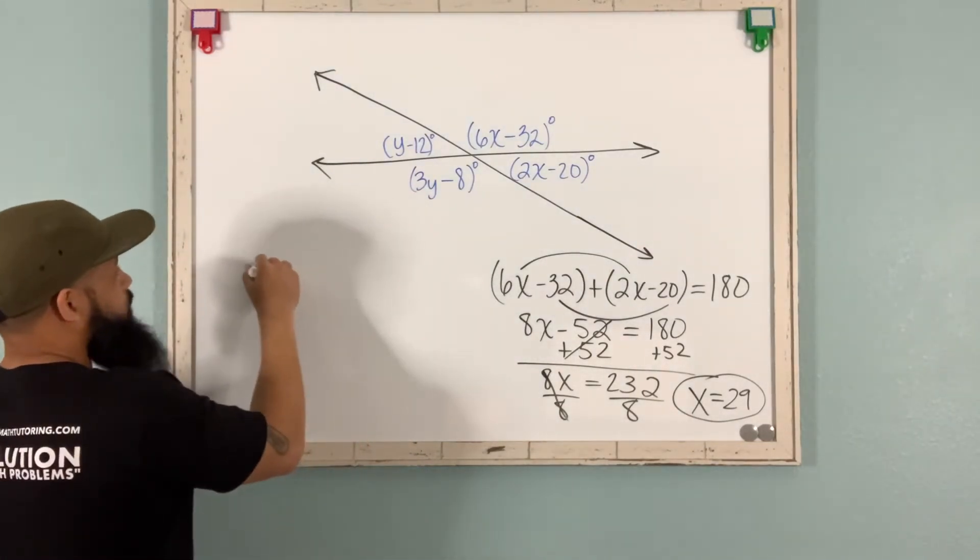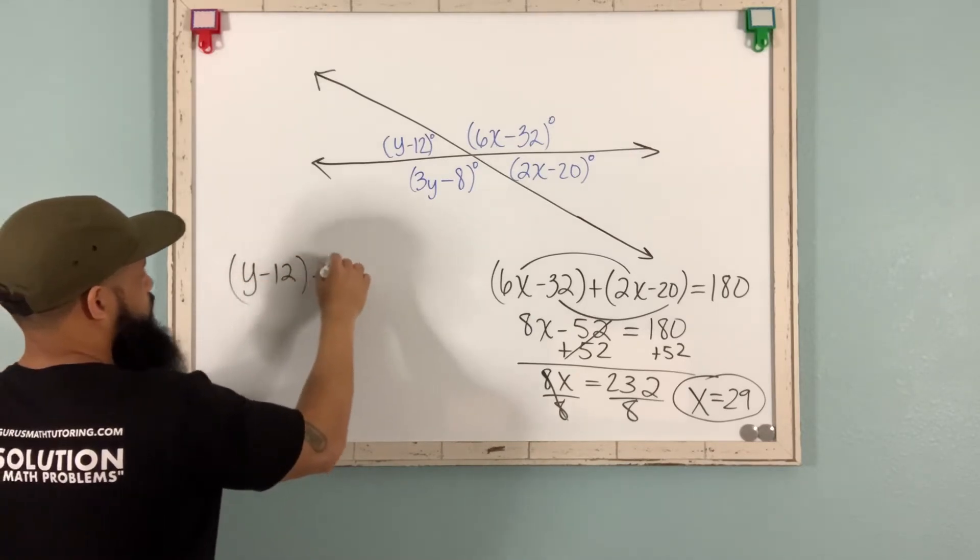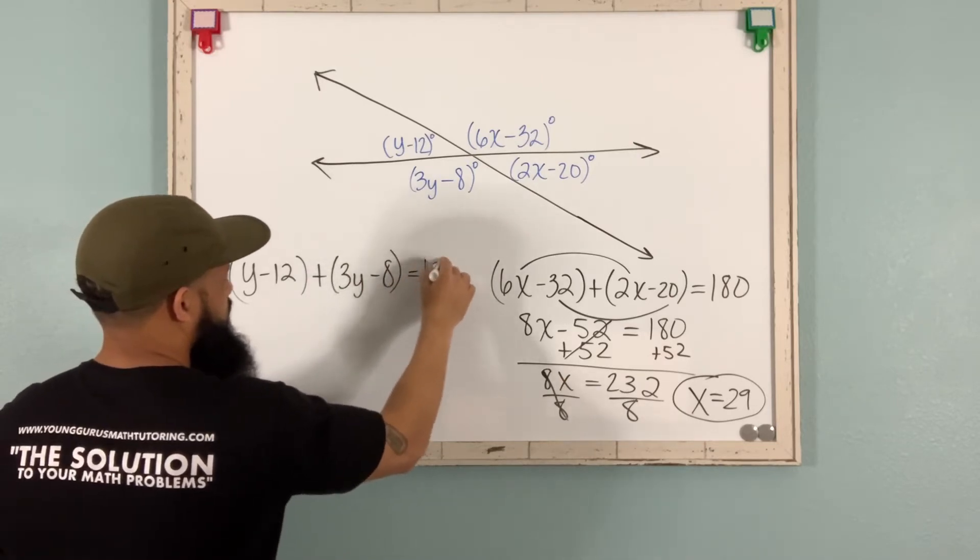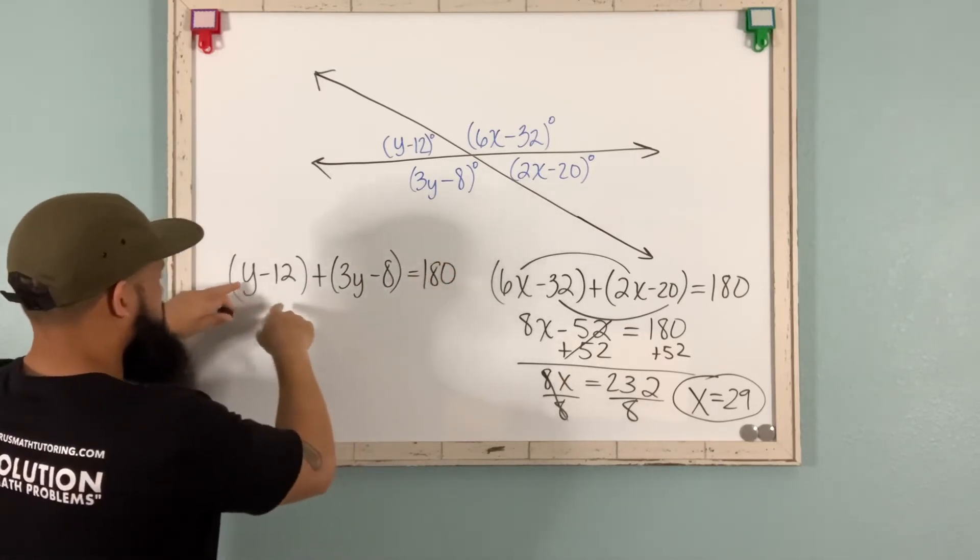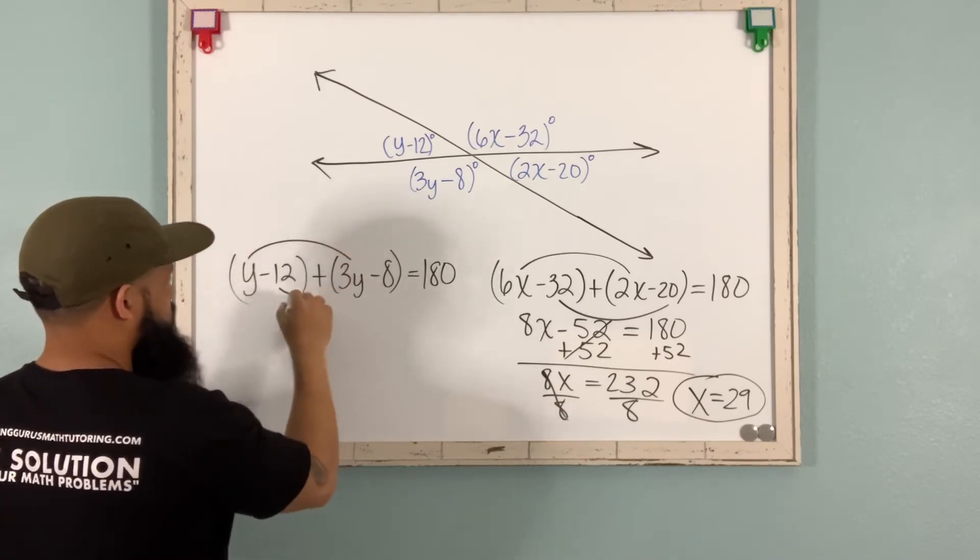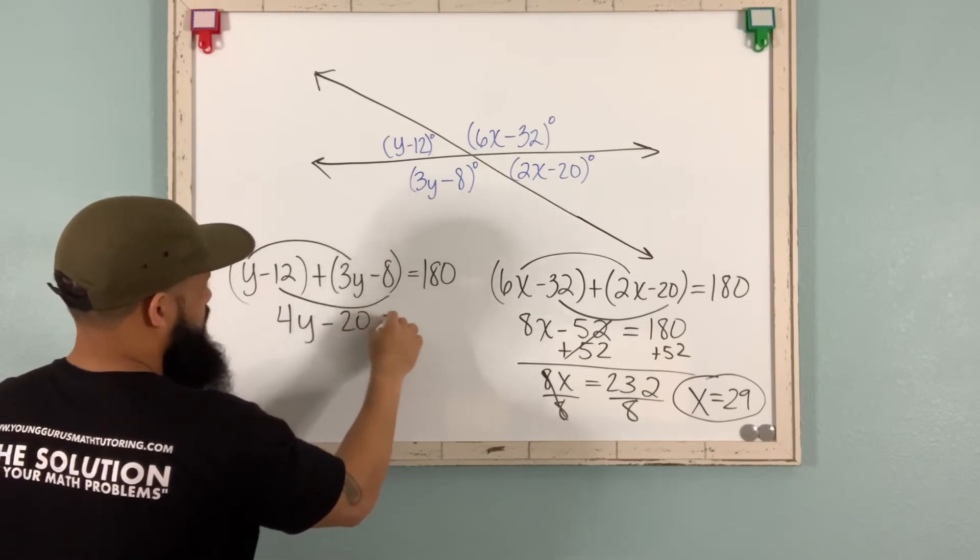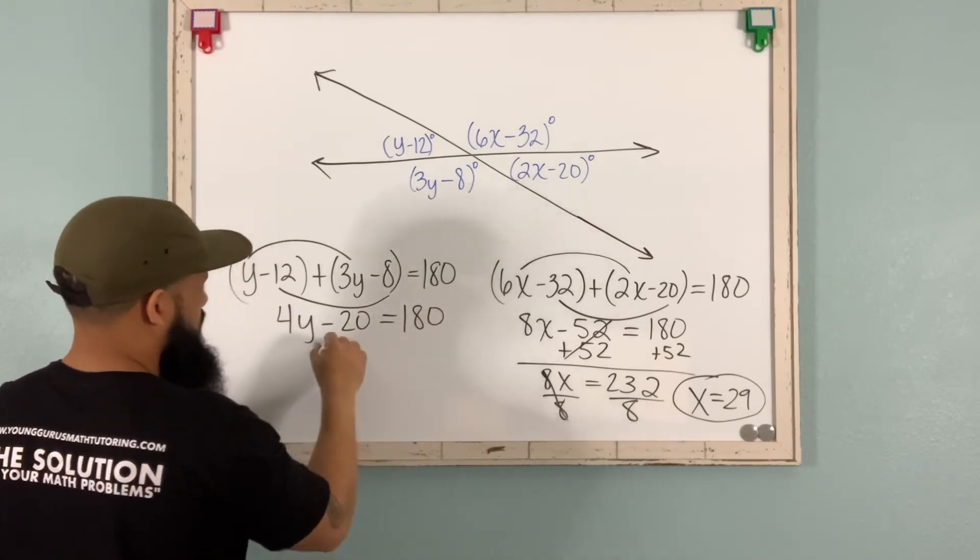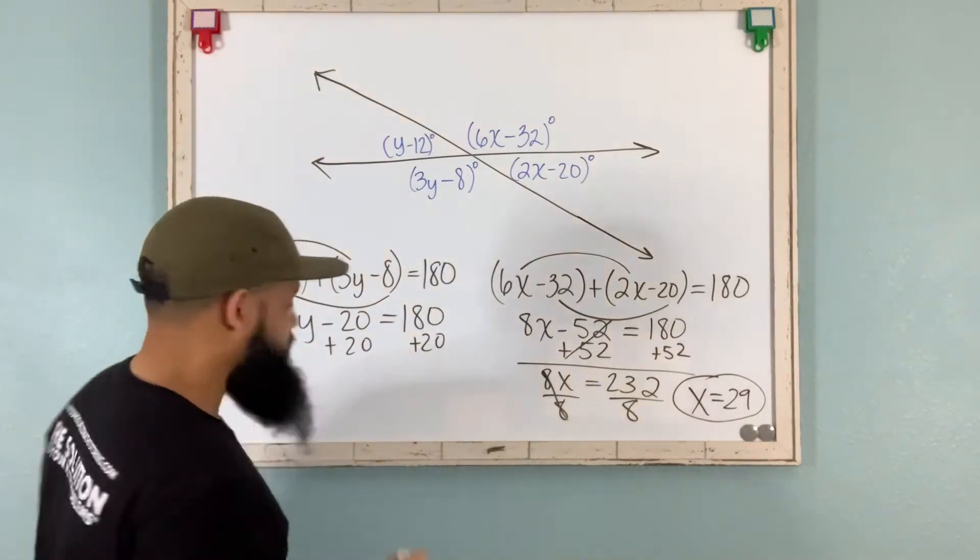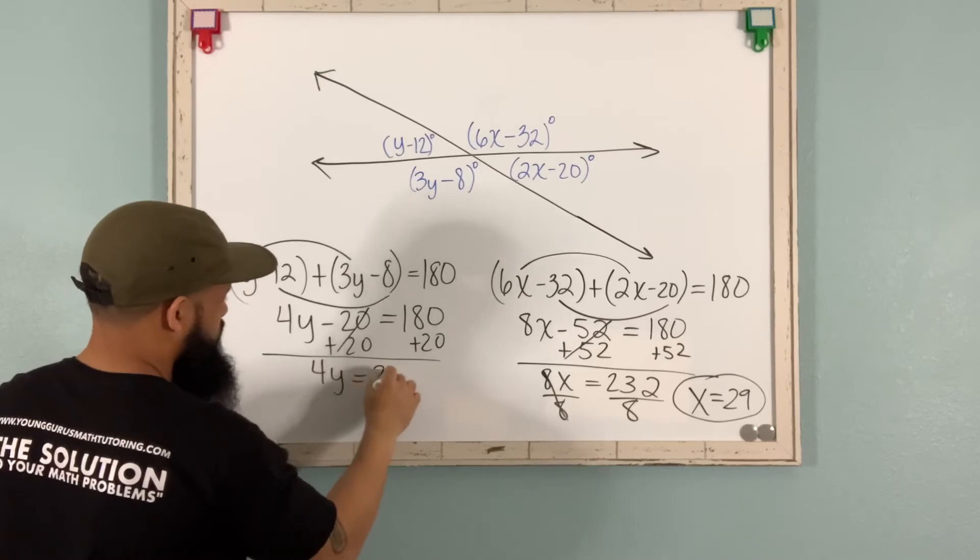Here on the y side, we'll say y minus 12 plus 3y minus 8 equal 180. All right? Combine like terms. y plus 3y gives me 4y. Negative 12 minus 8 gives me negative 20. And that equals 180. I want to add 20 to both sides because my goal is to get y by itself.